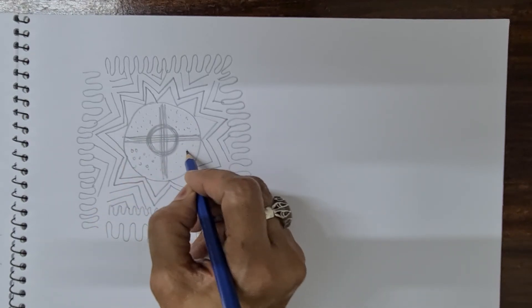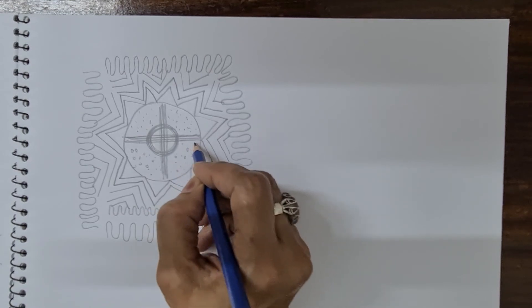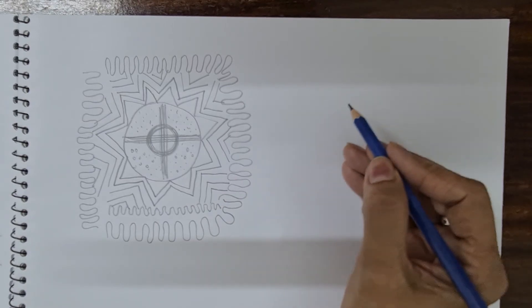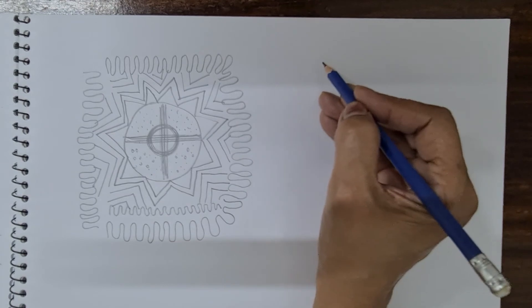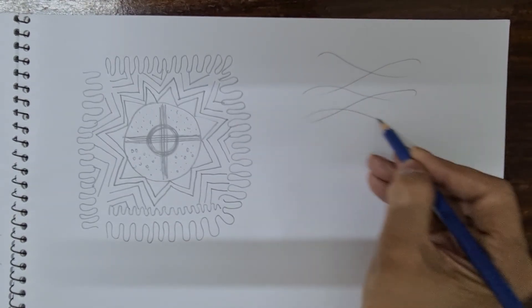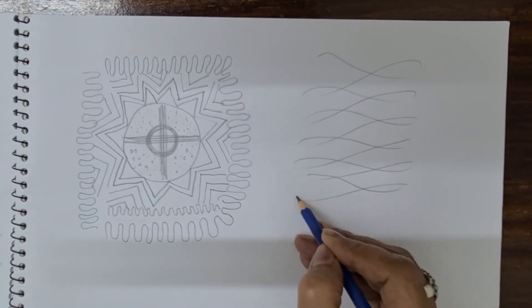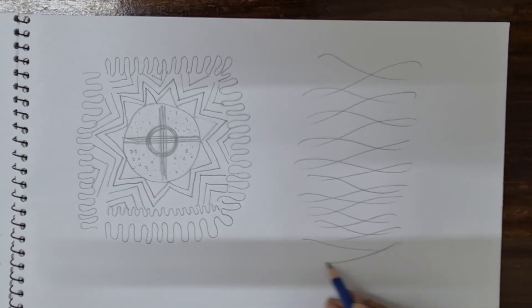Now if you start the simple just freehand lines like this, just overlap the lines like this. It's all just moving the pencil and to control your pencil properly like this.